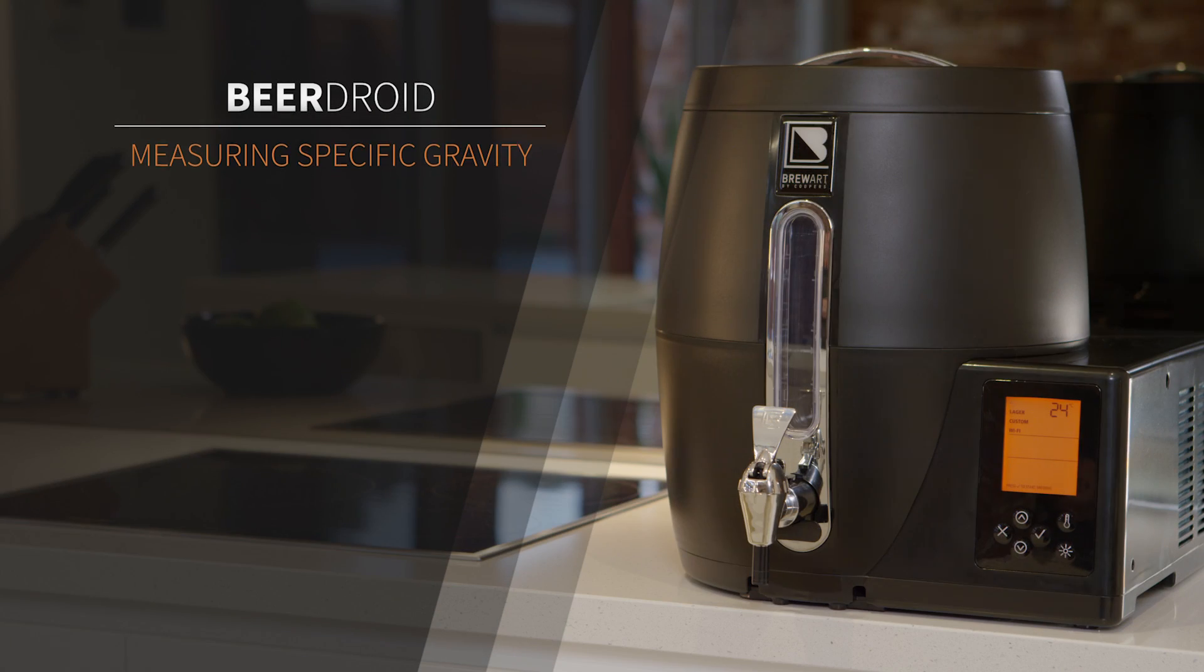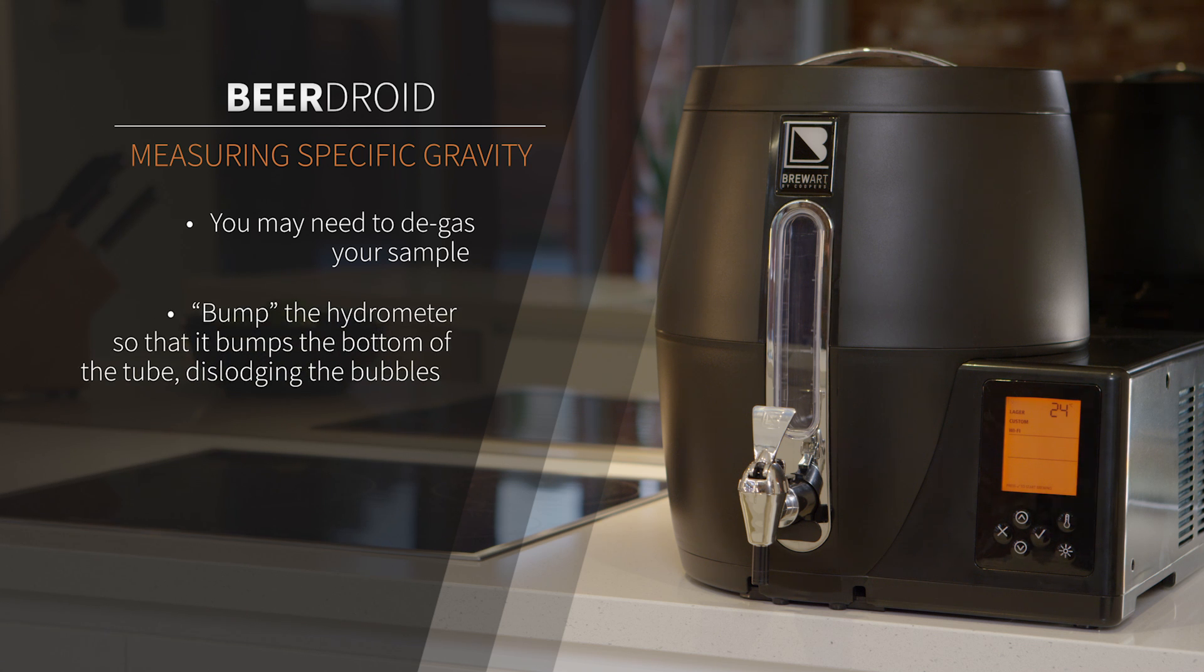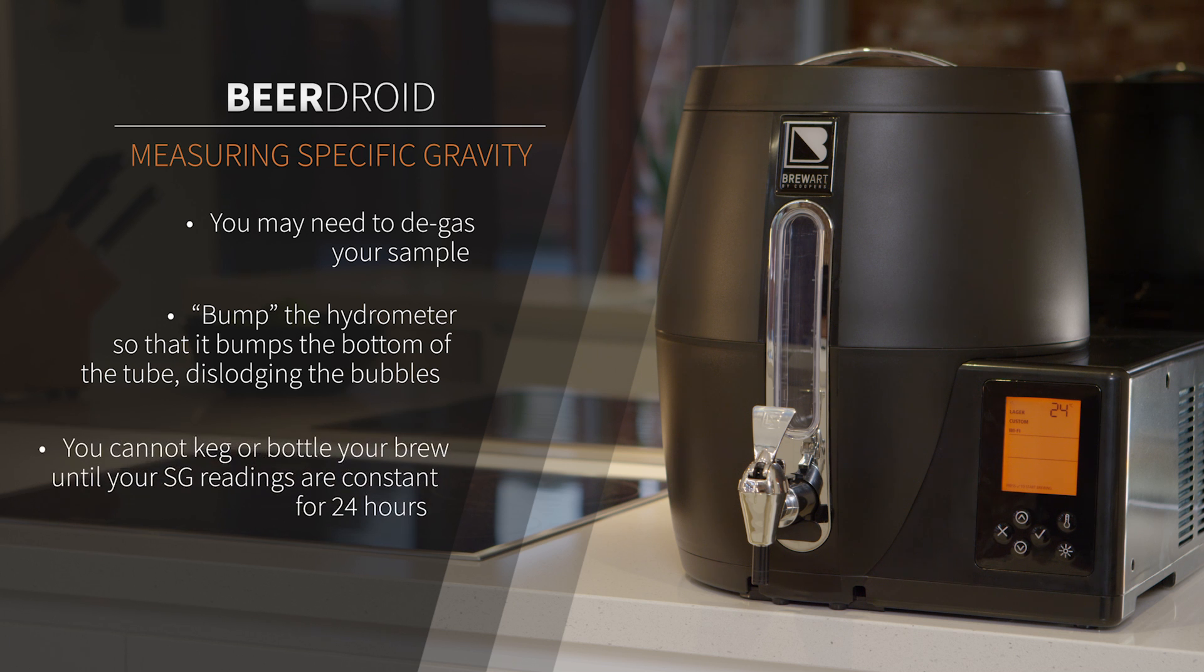If your sample is too foamy, you may need to degas it so that you can take an accurate reading. To do this, bump the hydrometer downwards so that it bumps the bottom of the tube, dislodging the bubbles. You cannot keg or bottle your brew until your SG reading is constant over 24 hours. If EOF is not detected, check the FAQs for further information.